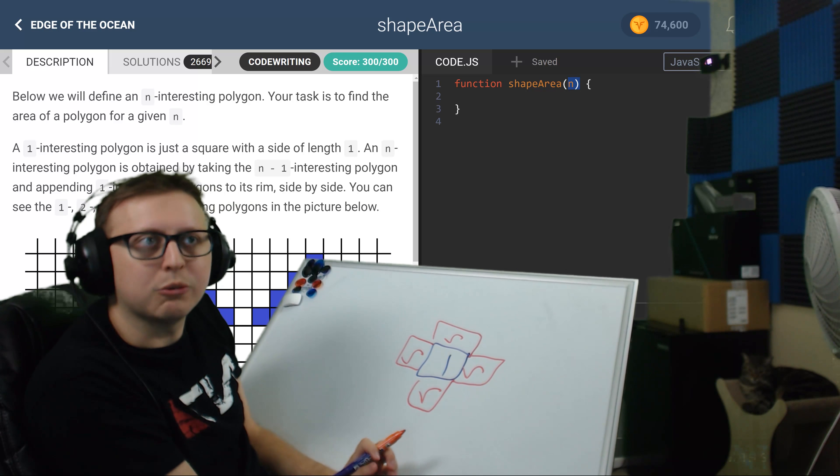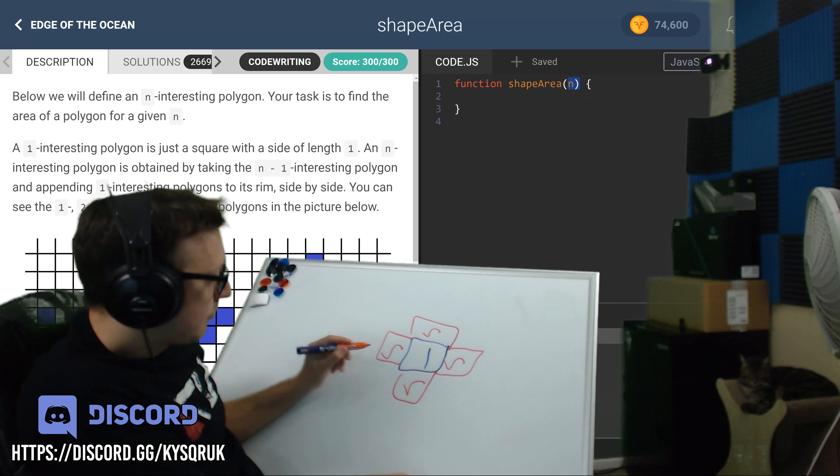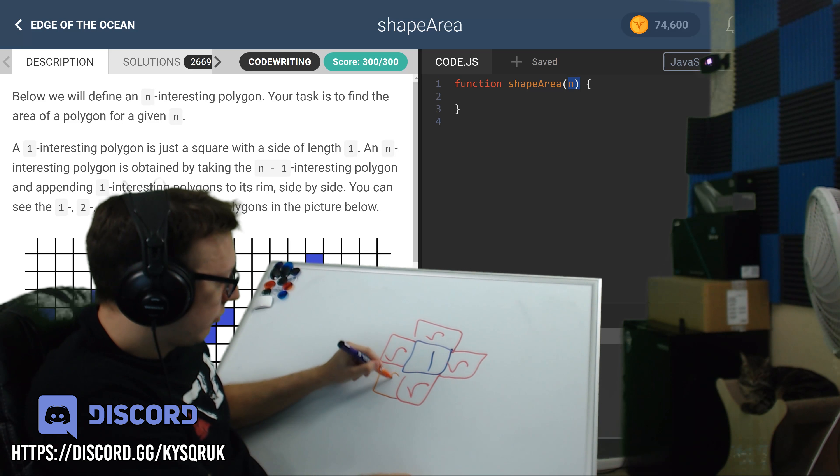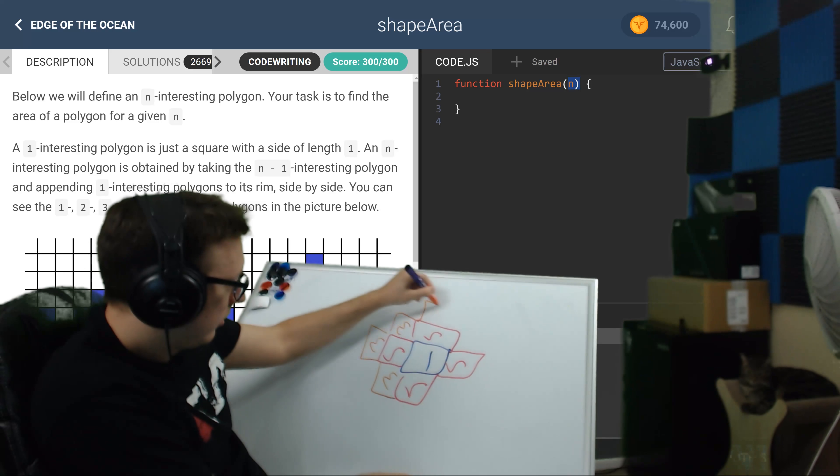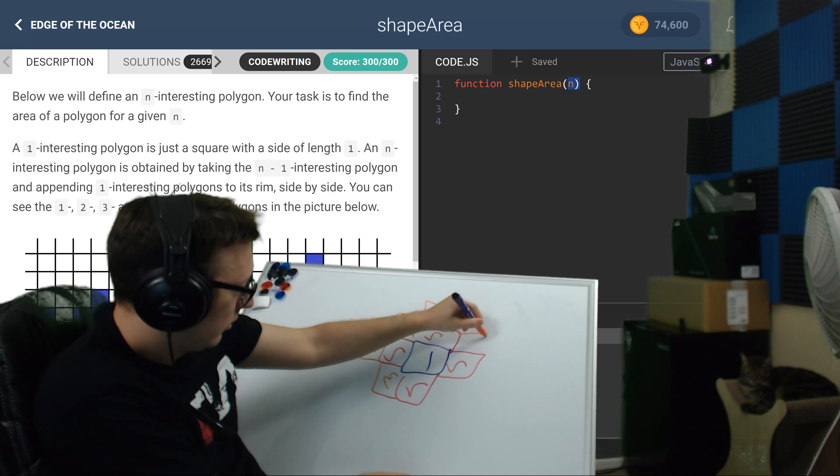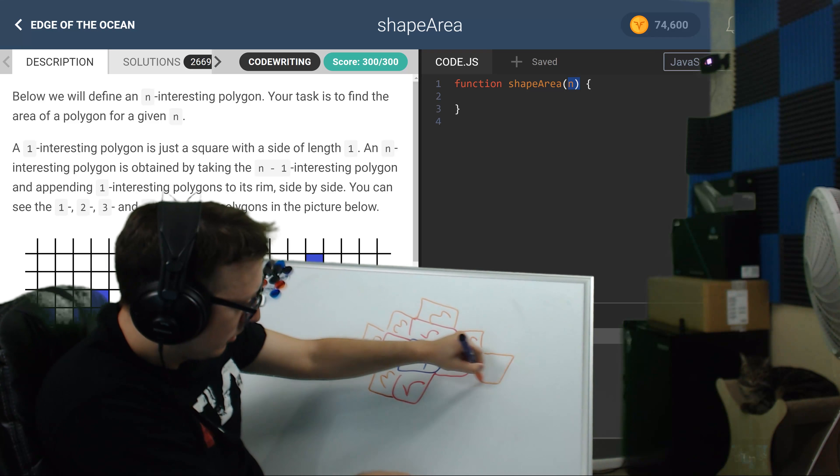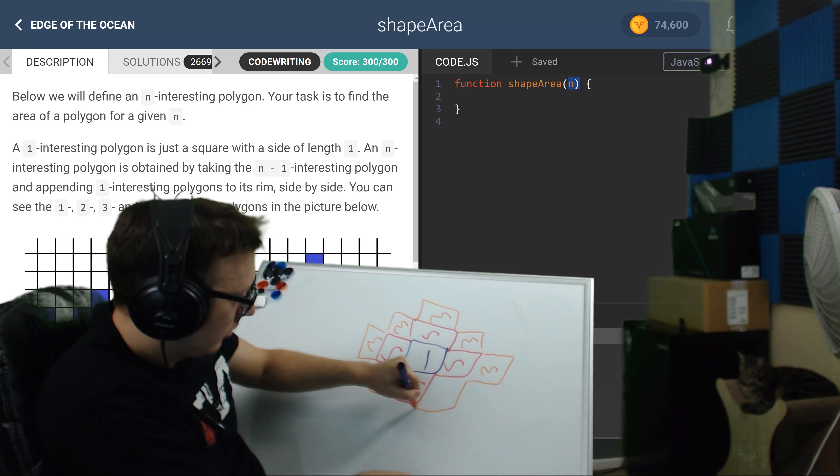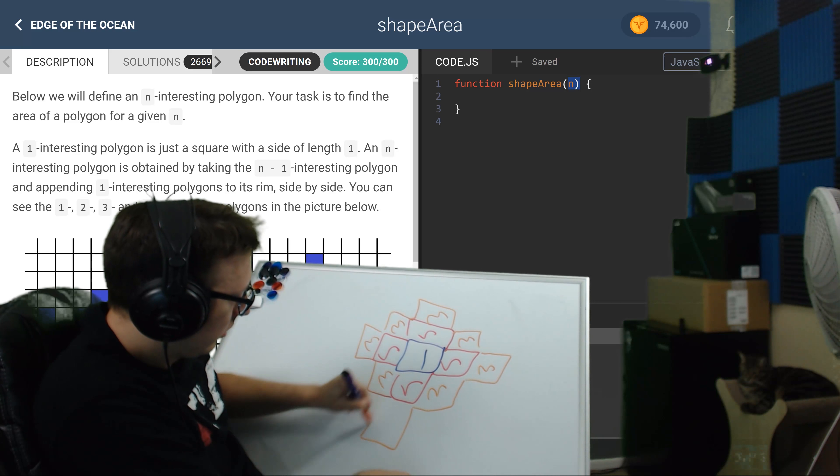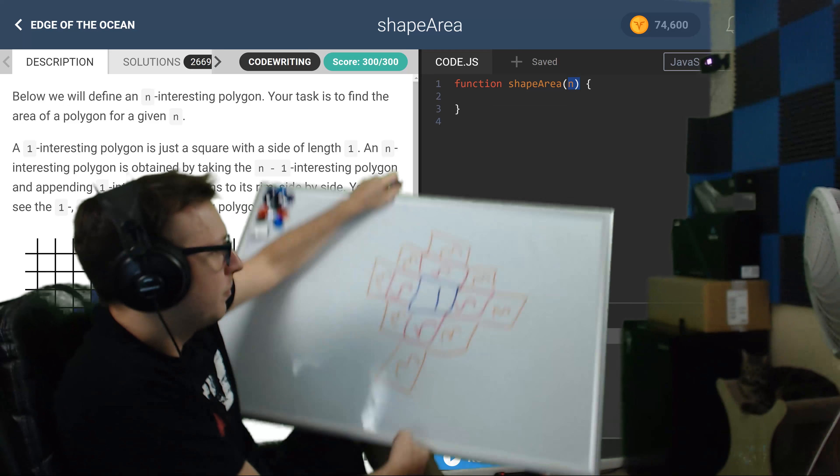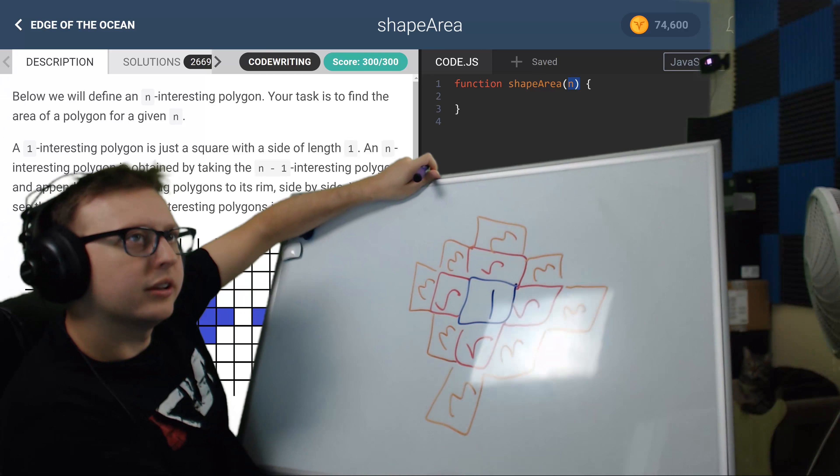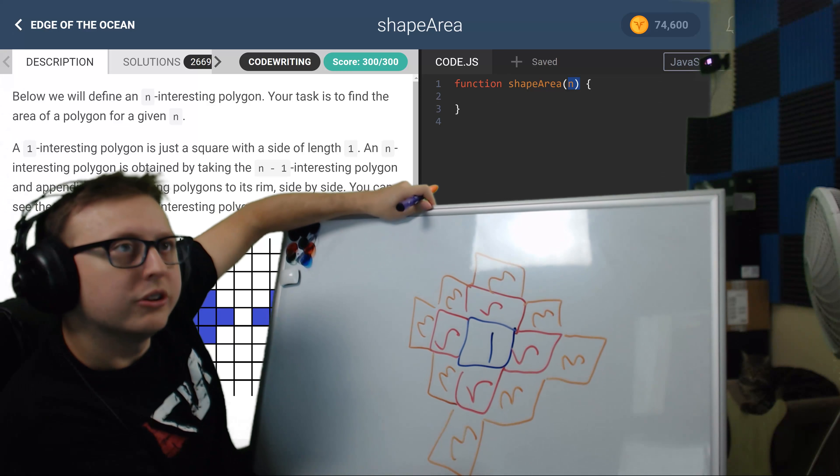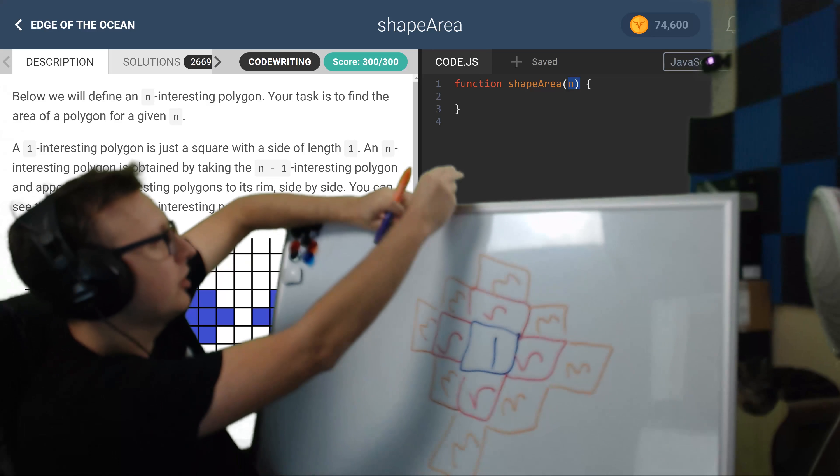So what we need to do is n is equal to three on top of here. The way that we do that, just draw it on, draw it on. Okay cool, so now we have it fully sort of drawn out.